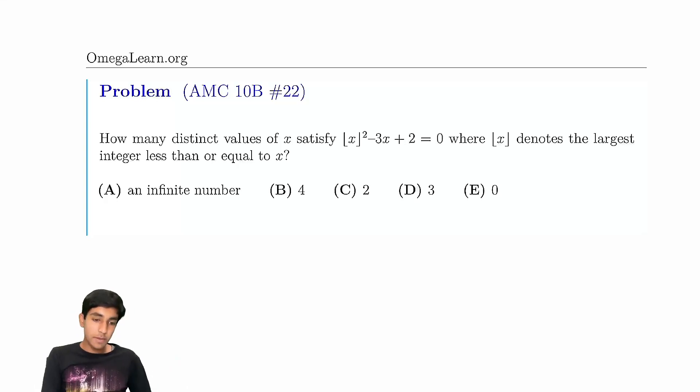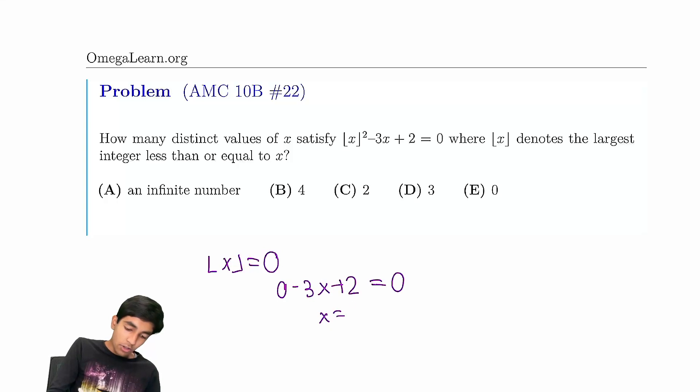So now the easiest way to go from here is just to do casework on the value of floor of x. Floor of x can be 0. So what happens if floor of x is 0? You must have 0 minus 3x plus 2 equals 0, so therefore x is 2/3. And that does work because that satisfies floor of x is 0. So that's one solution.